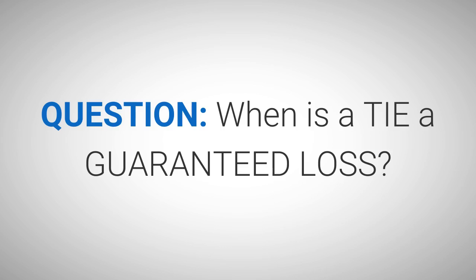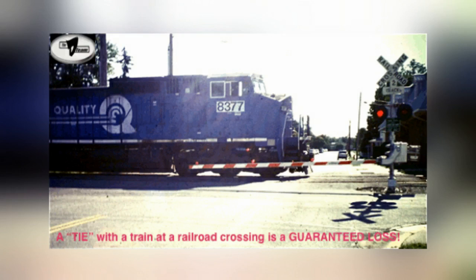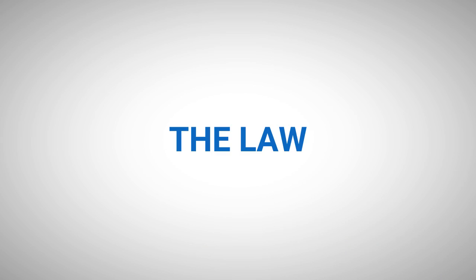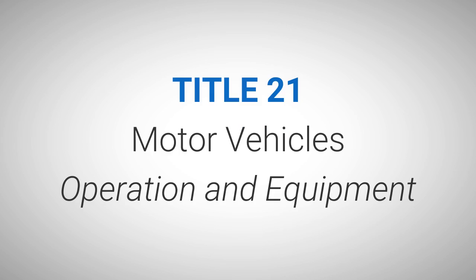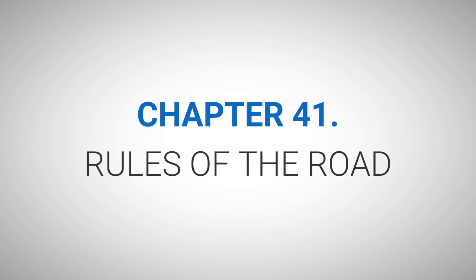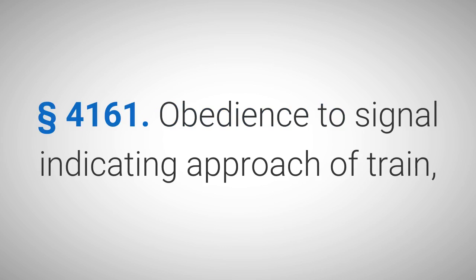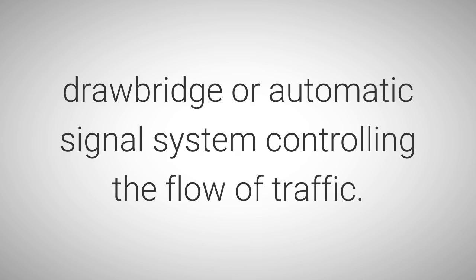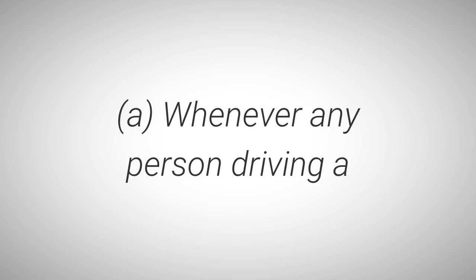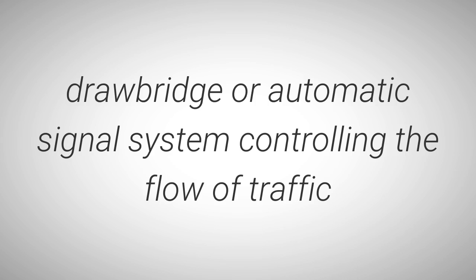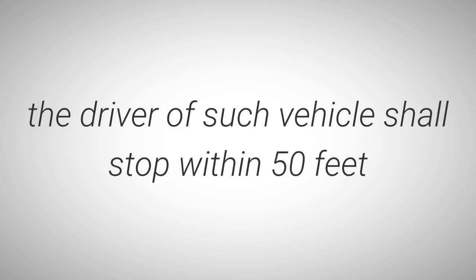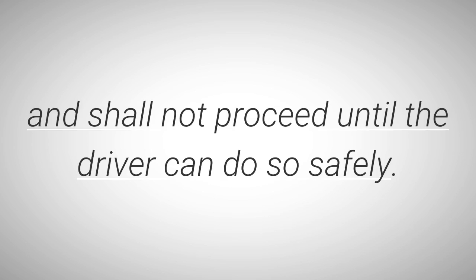Railroad crossings. Question: When is a tie a guaranteed loss? See picture 8-9 below. The Law: Title 21, Motor Vehicles, Operation and Equipment, Chapter 41, Rules of the Road, Subchapter 7, Special Stops Required, Section 4161. Obedience to a signal indicating approach of a train, drawbridge, or automatic signal system controlling the flow of traffic. Part A: Whenever any person driving a vehicle approaches a railroad grade crossing, drawbridge, or automatic signal system controlling the flow of traffic under any of the circumstances stated in the section, the driver of such vehicle shall stop within 50 feet but not less than 15 feet from the nearest rail of such vehicle and shall not proceed until the driver can do so safely.